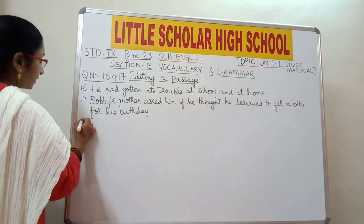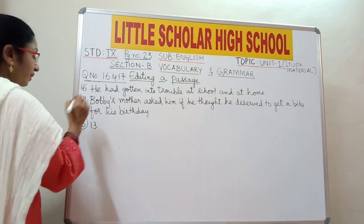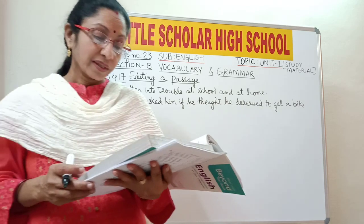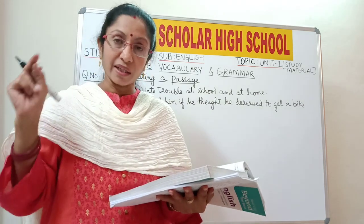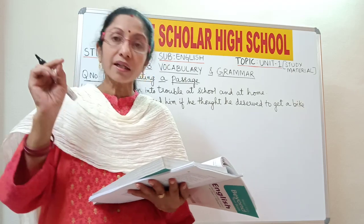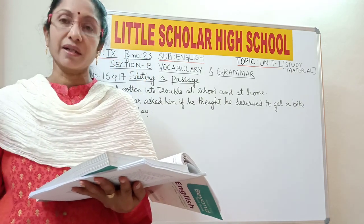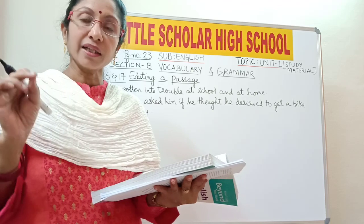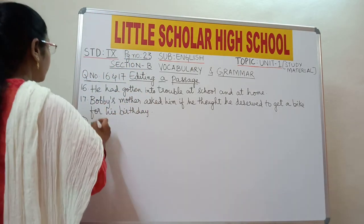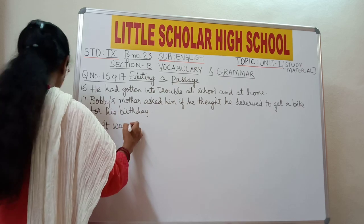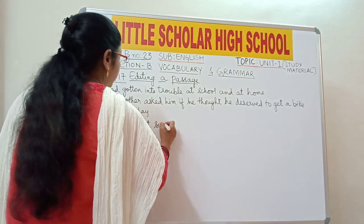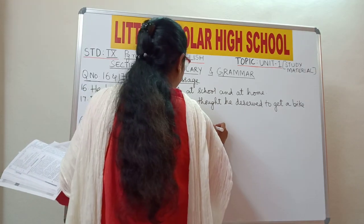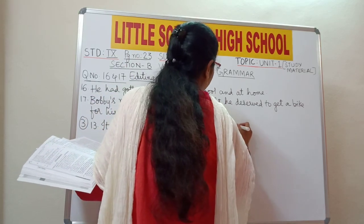Now third passage, again question number 13: 'It was hot summer night about 10 o'clock.' You are talking about one hot summer night, so the article 'a' is missing. You should write: 'It was a hot summer night about 10 o'clock.' Insert the article 'a.'